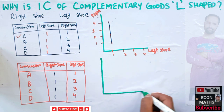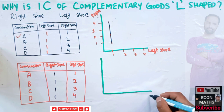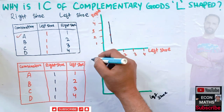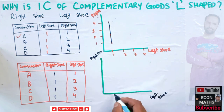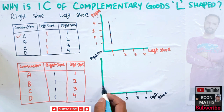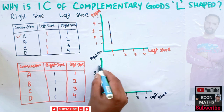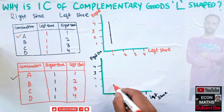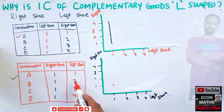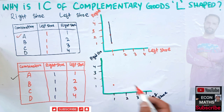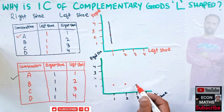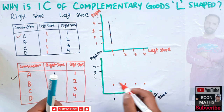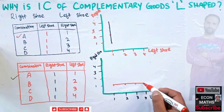Let's draw the graph for this second case. We have left shoe on one axis and right shoe on the other. For combination A, with one right shoe and one left shoe, we plot the point. Then one right shoe and two left shoes gives the next point, followed by one right shoe and three left shoes. Joining these points gives us a vertical line.